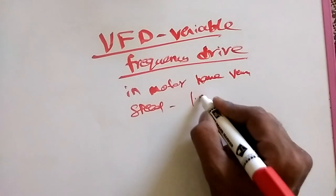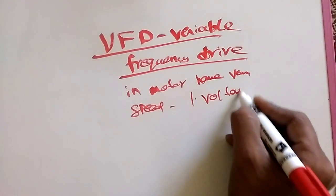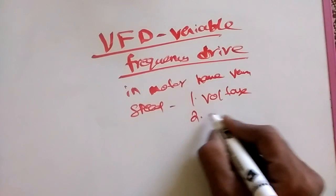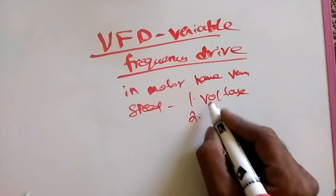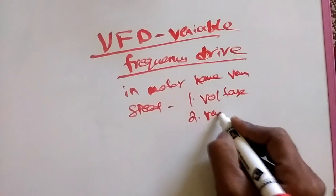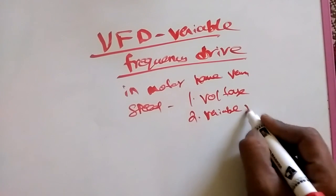First one is voltage speed control. Second one is variable resistance.